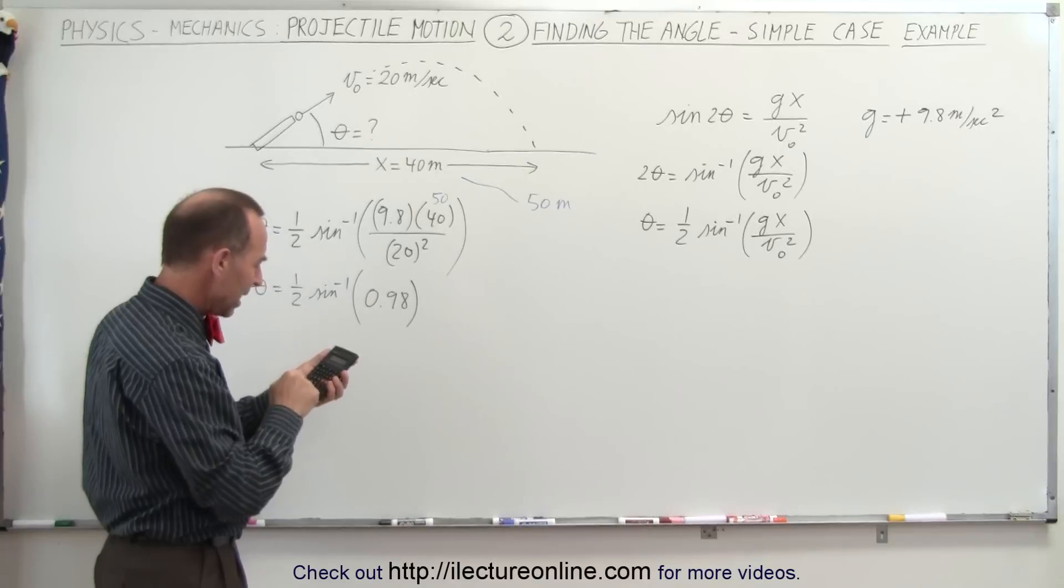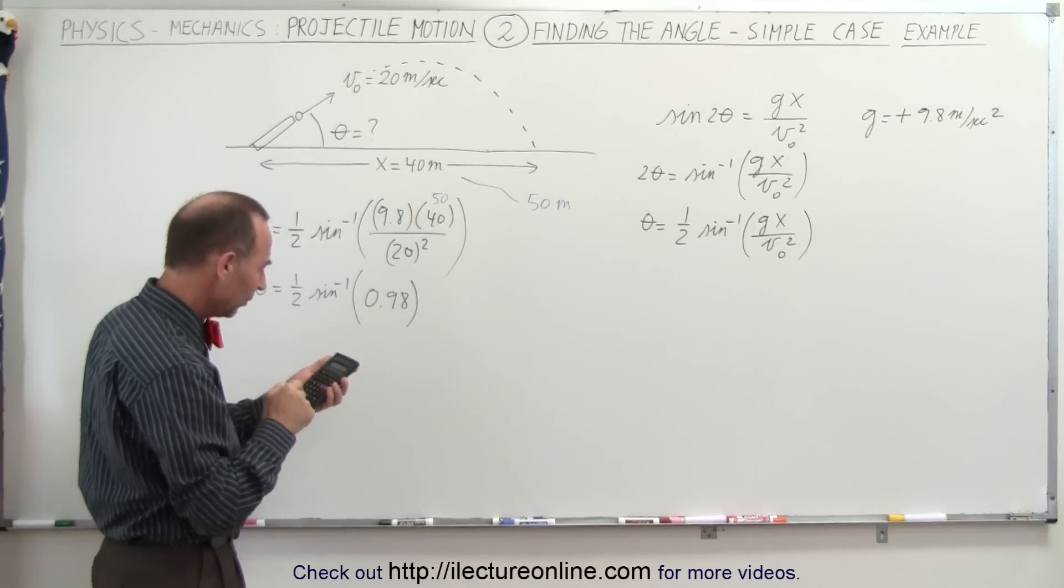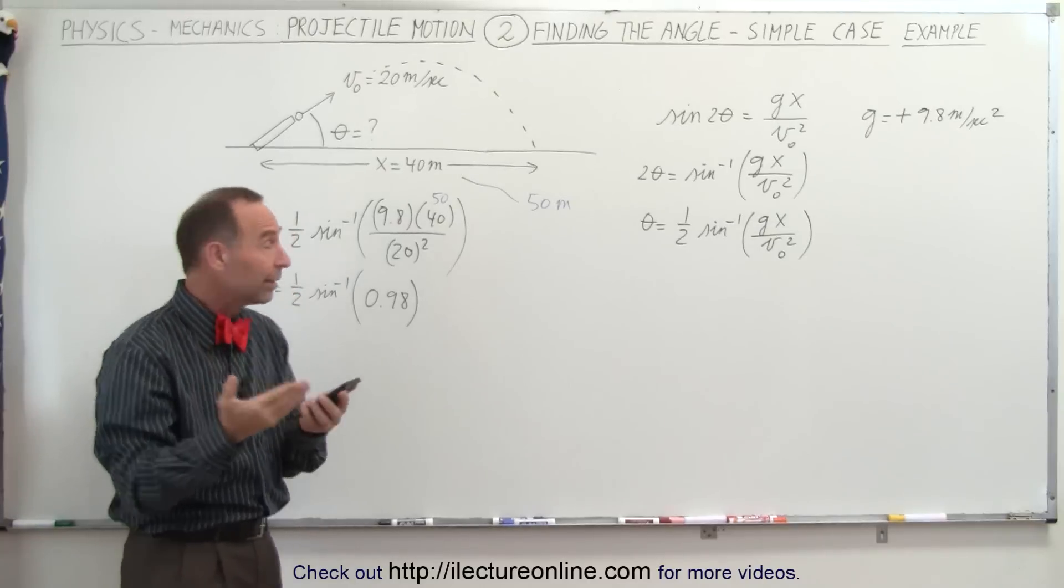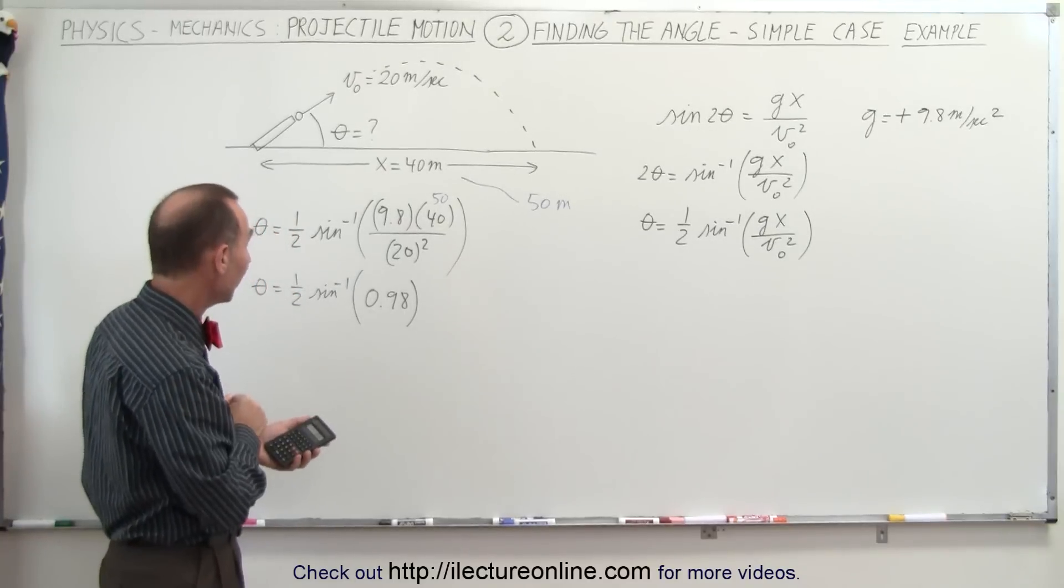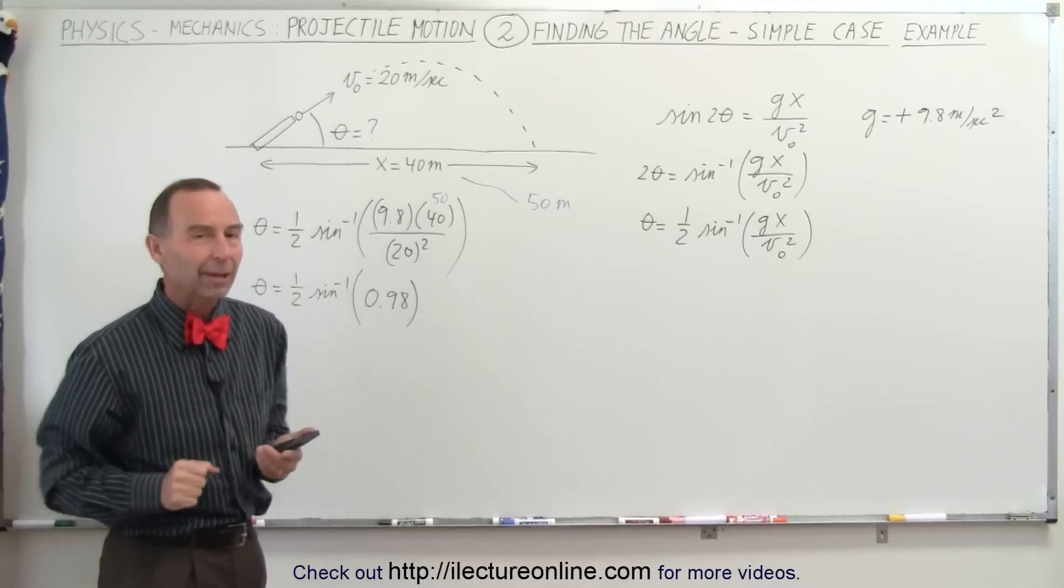So we end up with 9.8 times 50 divided by 400, and we end up with a number greater than 1. It would be 1.225, and you cannot take the arcsine of that, which means there is no answer in that particular case.